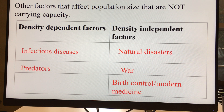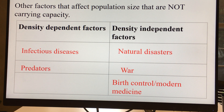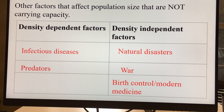Density independent factors do not depend on the density. For example, a natural disaster will certainly kill more people if it hits a highly populated area, but it's not more likely to occur in a densely populated area the way an infectious disease is. War, birth control, and modern medicine are all density independent.